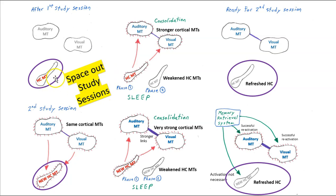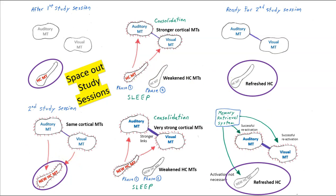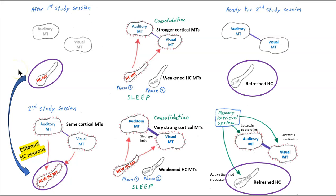Another way to think about spacing out study sessions is that we're refreshing the hippocampus. Right after a study session, we've already got strong hippocampal memory traces. But when we go to sleep and refresh, our hippocampus is ready for new learning — and it can be new learning about the same information. We then make a new hippocampal memory trace that gets used during consolidation that night, building our cortical memory traces while keeping our hippocampus refreshed. We want to study when the hippocampus is refreshed. If we've already got strong hippocampal memory traces from studying for two hours, don't study for a third hour — take a break, ideally sleep, and study the next day.